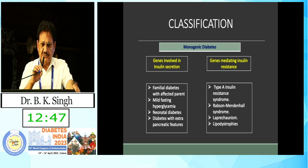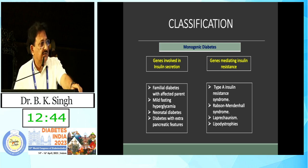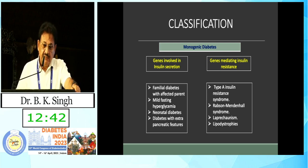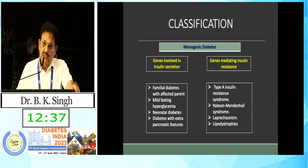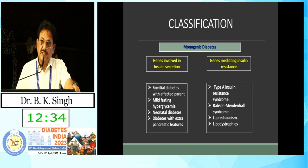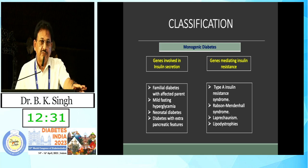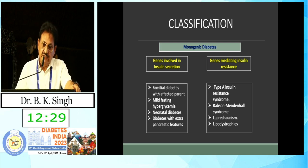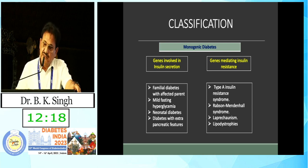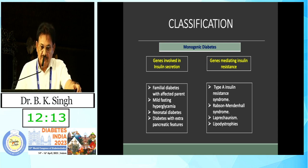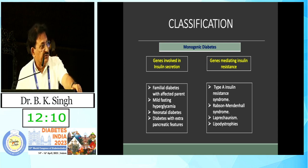There are two major groups of monogenic diabetes: genes involved in insulin secretion, and genes mediating insulin resistance. I will discuss mainly the genes involved in insulin secretion. There are four major groups: familial diabetes with affected parents, mild fasting hyperglycemia, neonatal diabetes, and diabetes with extra-pancreatic features. In the insulin resistance group: type A insulin resistance syndrome, Rabson-Mendenhall syndrome, and lipodystrophy.